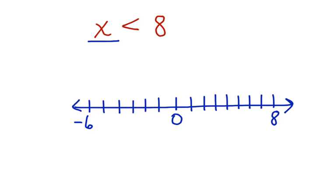Here I have drawn a number line with the values represented between 8 and negative 6. Now I know that x has to be less than 8. So to graph this I am going to put an open circle on my 8 to show that I can't include that in the value for x.